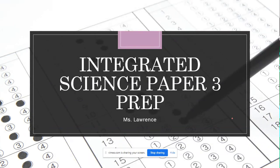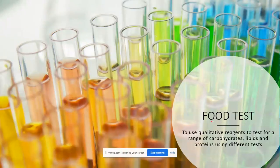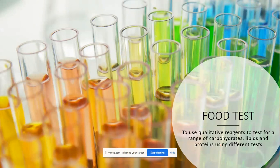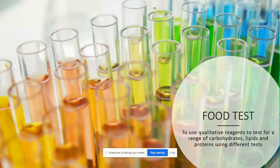So let's get into it. The first thing we want to do is the food tests. We have to use qualitative reagents to test for a range of carbohydrates, lipids, and proteins using different tests. The main carbohydrates we look for are reducing sugars — these are mostly monosaccharides, for example glucose or fructose. They are single units not bound to anything else, and those are what we are looking for based on the food test requirements.